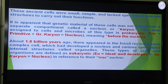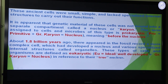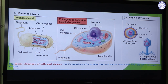About 1.1 billion years ago, there appeared in the fossil record a more complex cell which had developed a nucleus and various specialized internal structures called organelles. These organelles include mitochondria, chloroplasts, ribosomes, peroxisomes, Golgi bodies, etc. These types of cells and organisms are defined as eukaryotic — 'eu' means ideal or well-developed in Greek, and 'karyon' means nucleus, meaning they have a true nucleus. These are the basic cell types: prokaryotic cells, eukaryotic cells, and examples of viruses.